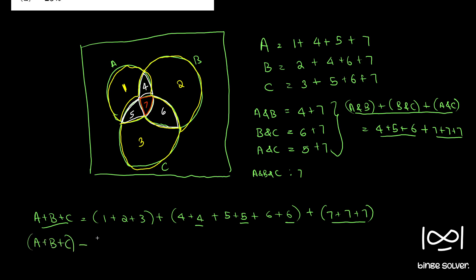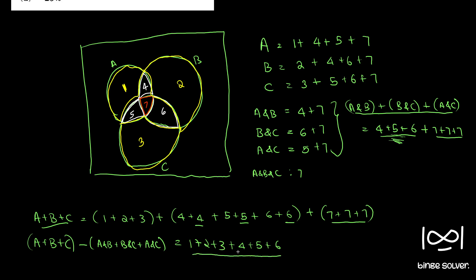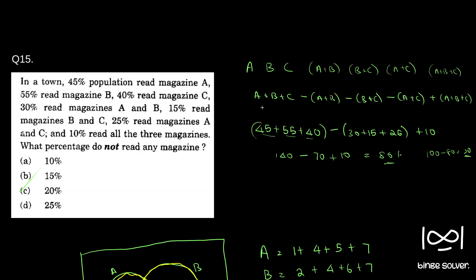So what is left after A plus B plus C minus (A and B) minus (B and C) minus (A and C)? We get regions 1 plus 2 plus 3 unchanged, each of 4, 5, 6 with only one count remaining, and all the 7s completely removed. So to get all the regions, we need to add back A and B and C — which is just region 7 — to recover it.